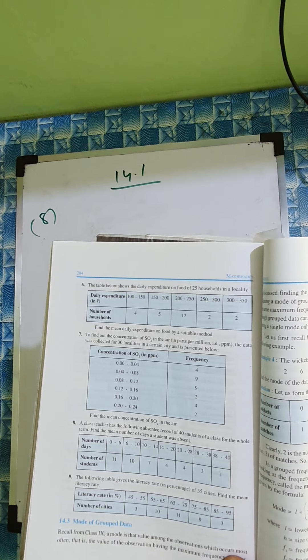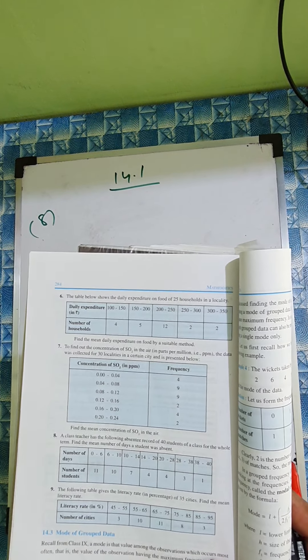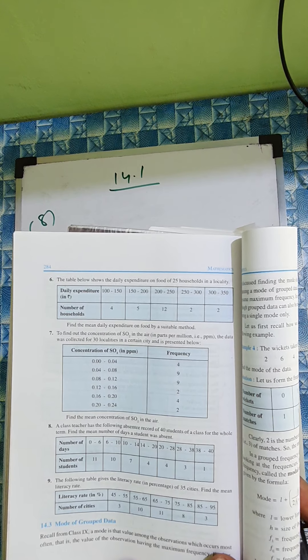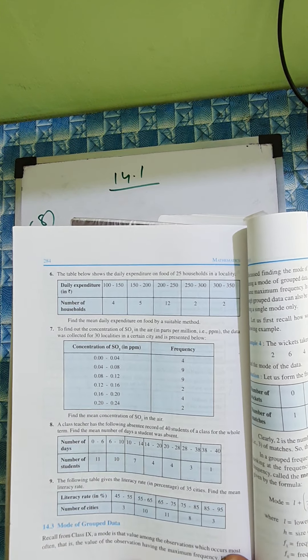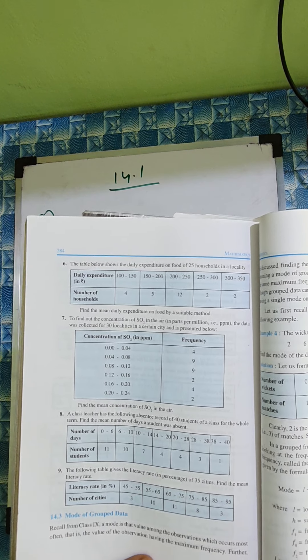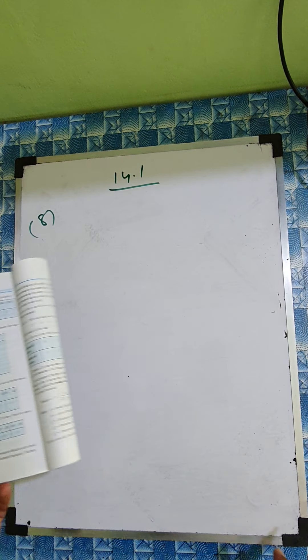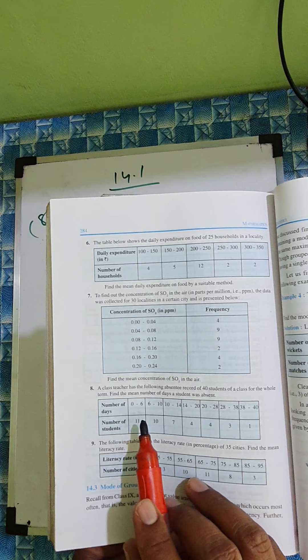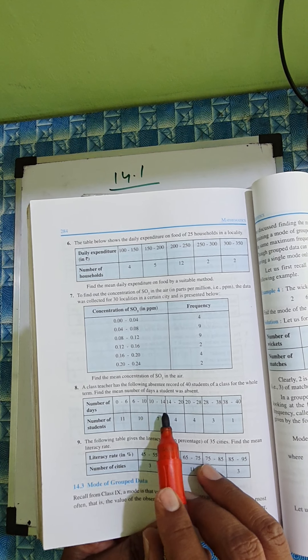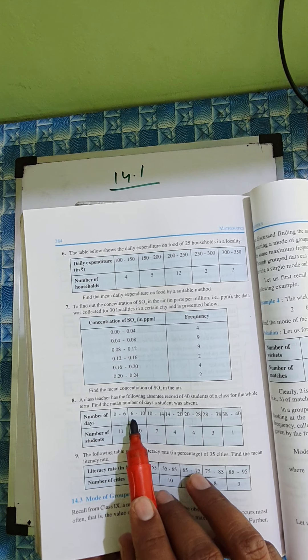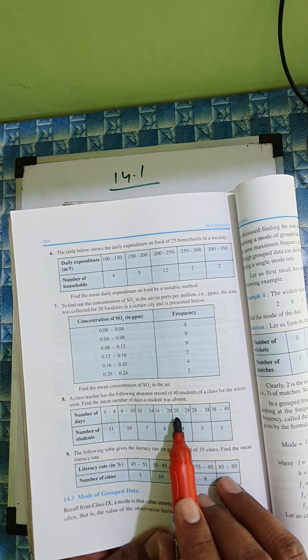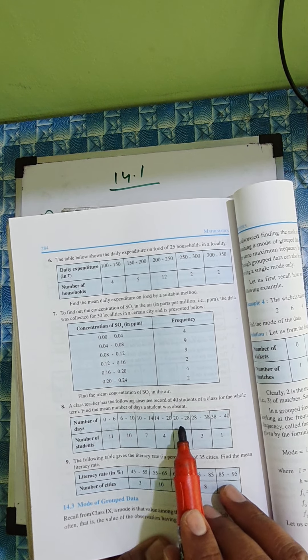Next question number eight in exercise 14.1. The class teacher has the following absentee record of 40 students of the class for the whole term. Find the mean number of days the students were absent. You can see 0 to 6, then 6 to 10, 10 to 14. The difference is 6 here but here 4, and here 6 difference, here 10 difference.